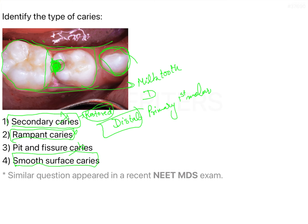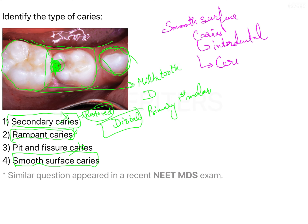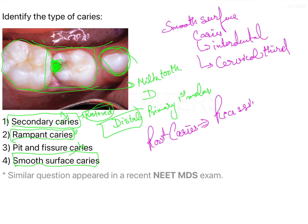Smooth surface caries are generally seen in the interdental area, that is the proximal area, or in the cervical third of the teeth where more plaque accumulates and is harder to clear. There are also root caries, also known as cemental caries, which are generally seen in older patients who have gingival recession — due to the recession, the root surface becomes exposed and is more prone to developing caries.